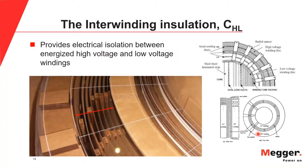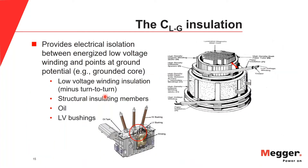CHL is called the interwinding insulation. It provides electrical isolation between energized high and low voltage windings, and is comprised to a large extent of paper. As a consequence, moisture in the transformer is attracted to this region since paper has such an affinity for moisture. You can see the pressboard barriers here, separated by winding sticks that create cooling ducts for oil to flow through that region.